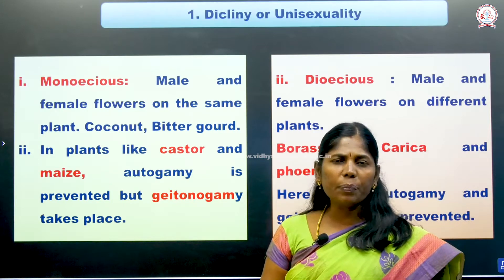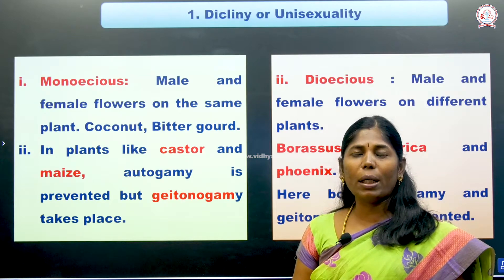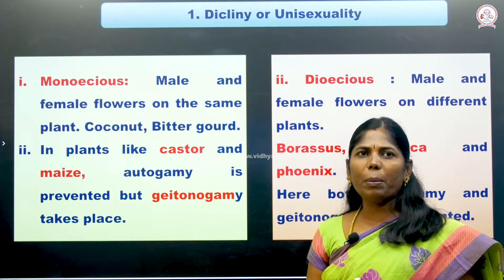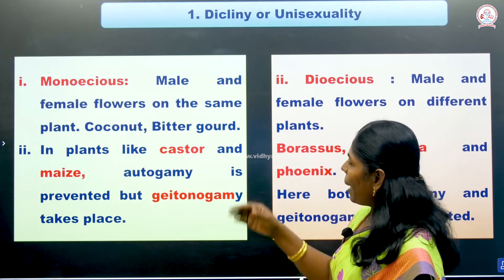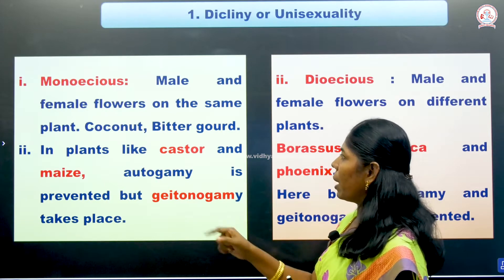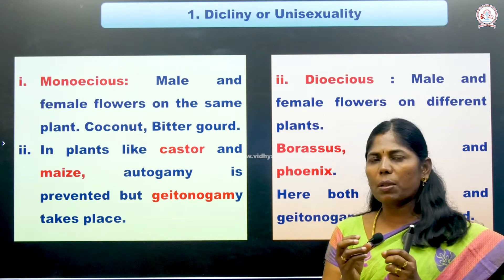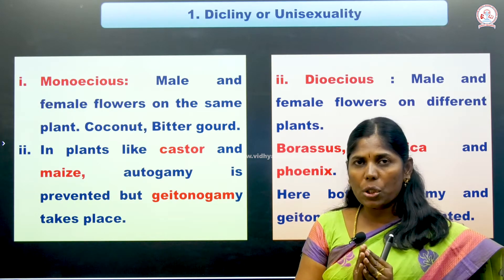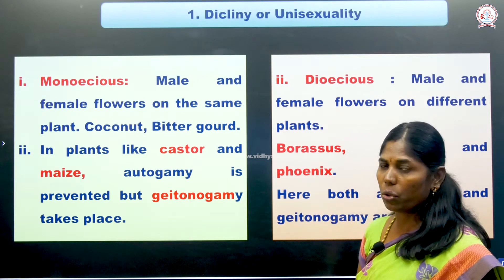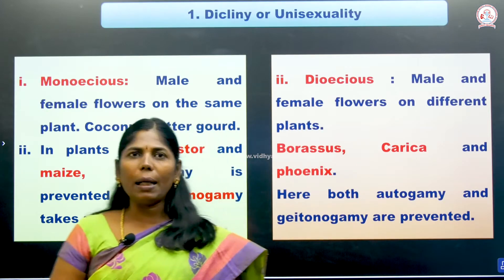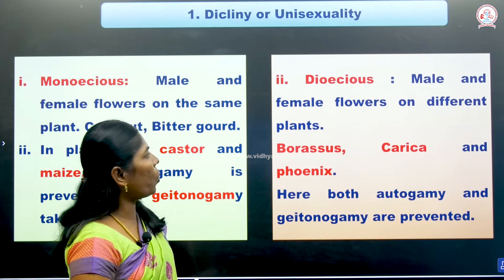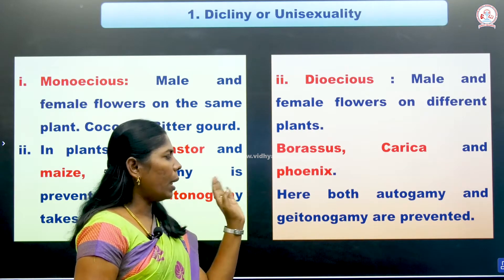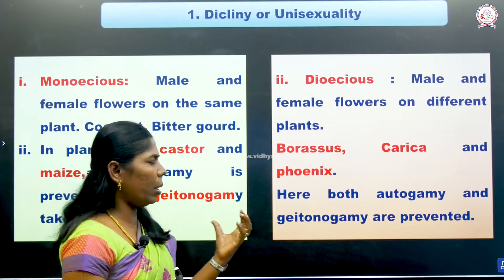Diclinty means only male flowers or only female flowers are present. Monoecious plants have male and female flowers on the same plant — examples are castor, maize, coconut, and bitter gourd. In monoecious plants, autogamy is prevented but geitonogamy takes place. Dioecious plants have male and female flowers on different plants — examples are Borassus, Carica, and Phoenix. In dioecious plants, both autogamy and geitonogamy are prevented.